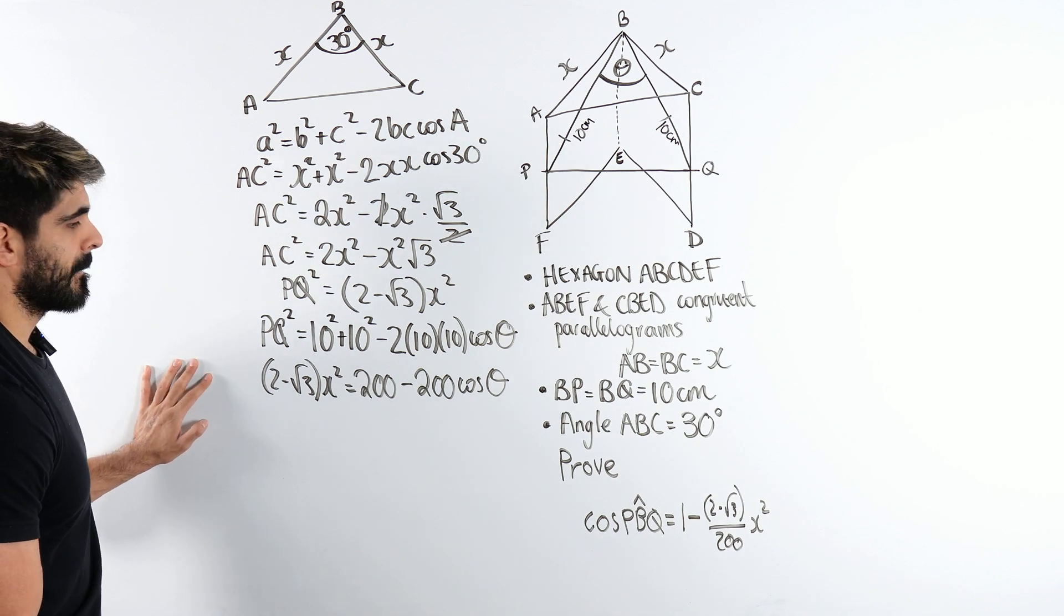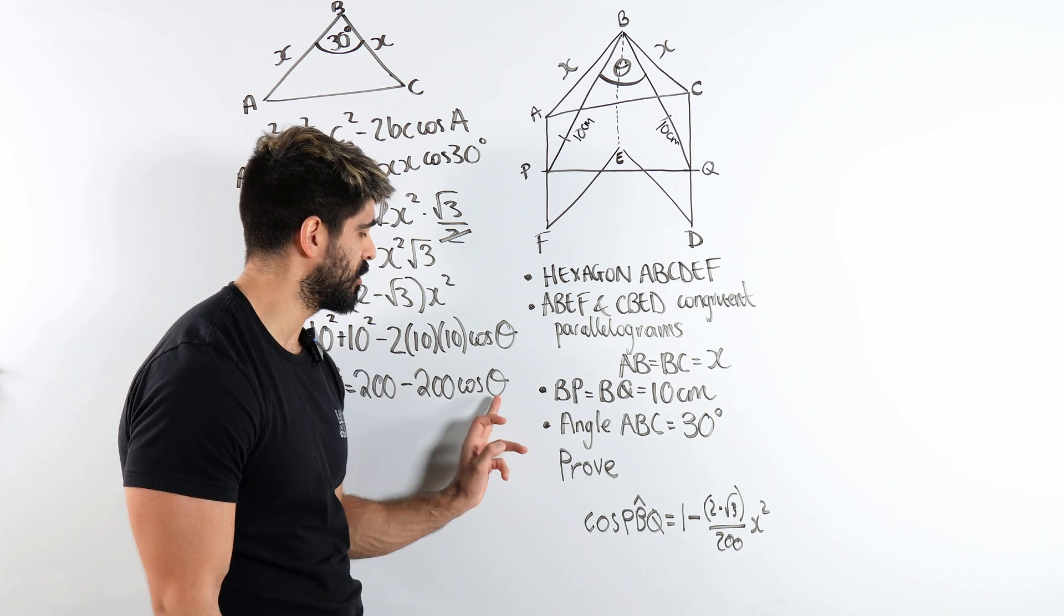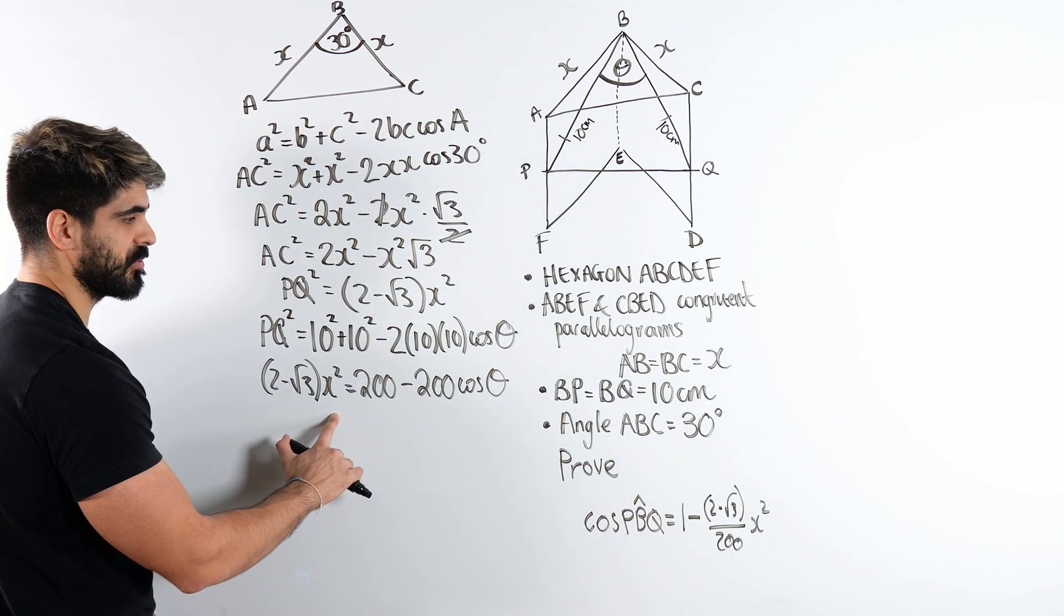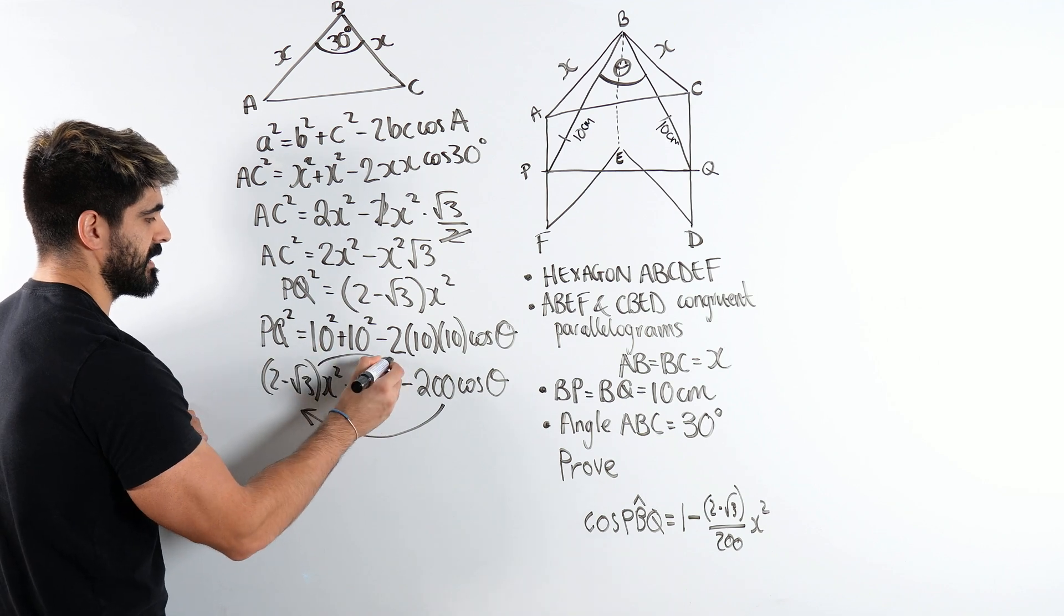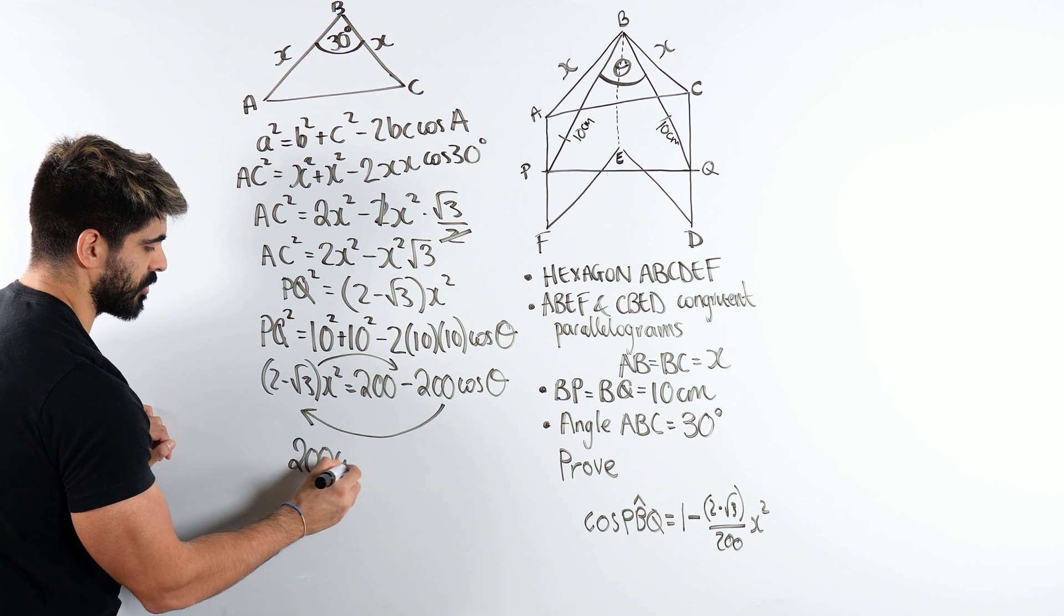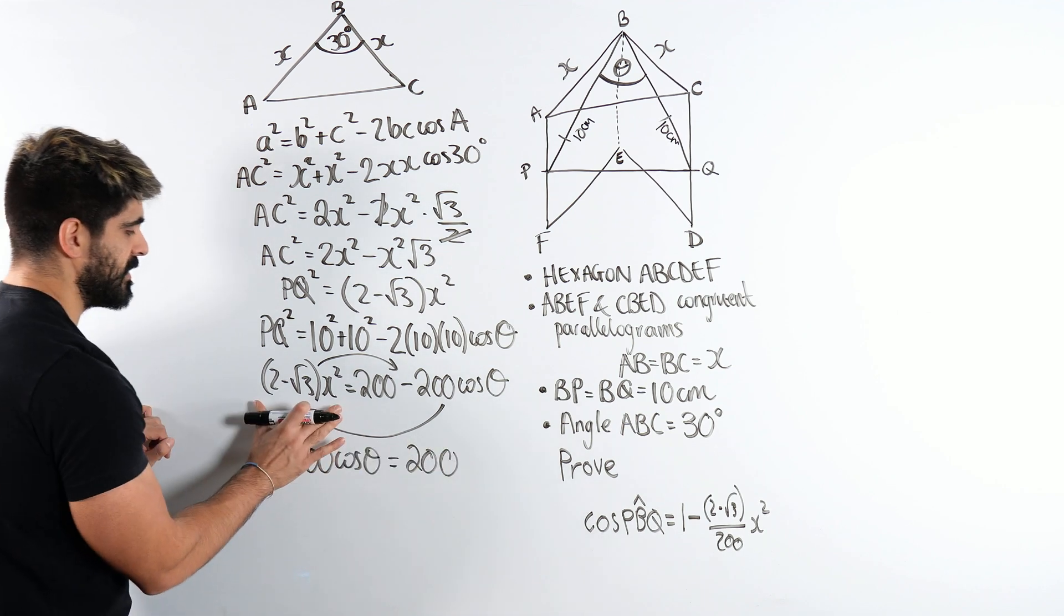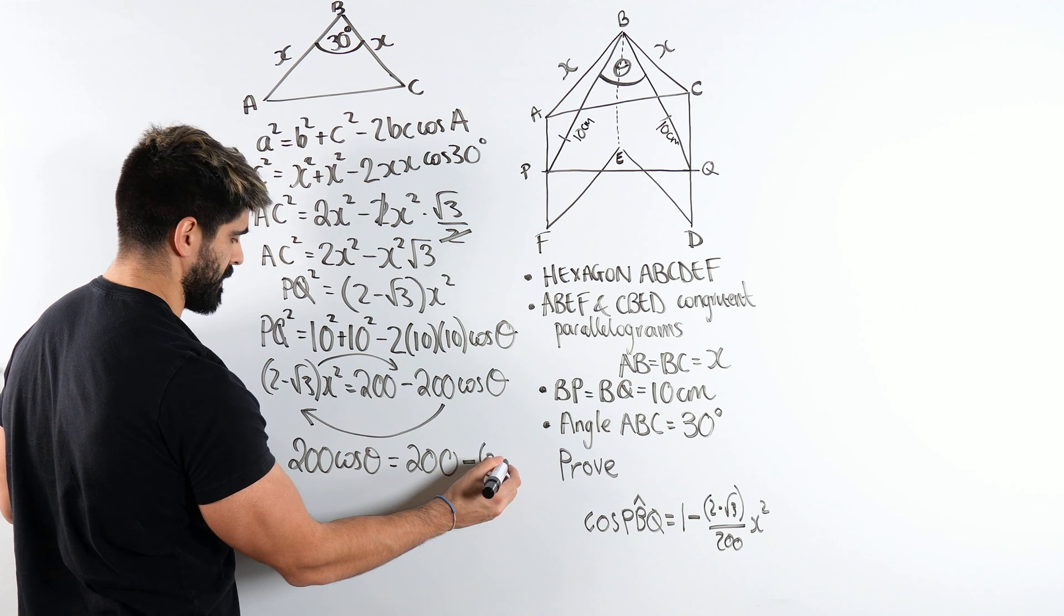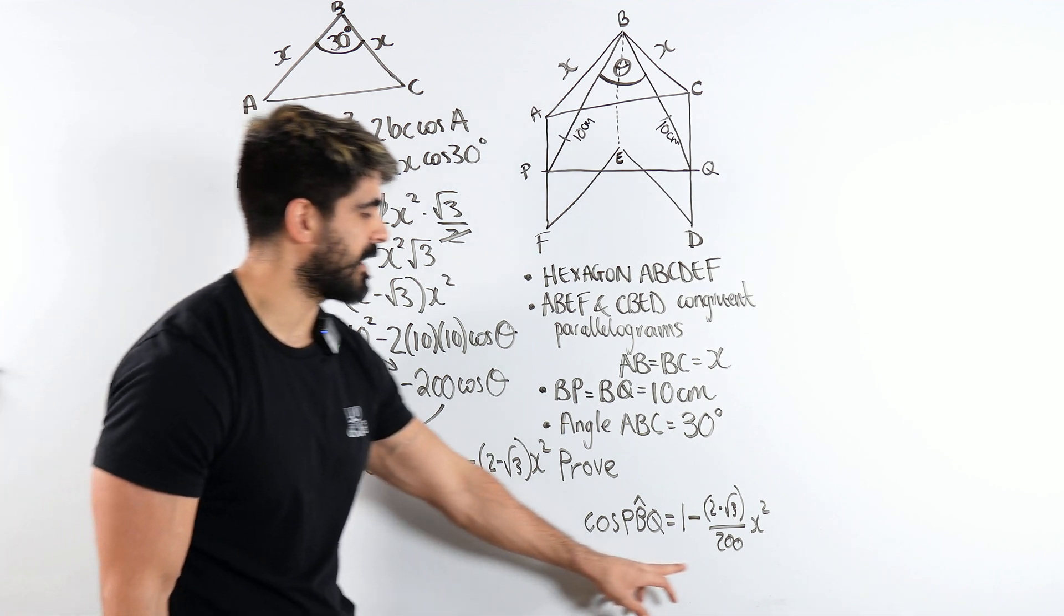Now, I see how they're doing this. We're going to rearrange for cos PBQ. So the first thing I'm going to do - 2 minus root 3, 2 minus root 3 X squared. So I'm going to bring this here to make it positive. I'm going to bring this here to make it negative. So the minus 200 cos theta over on this side will be 200 cos theta is 200, then this positive thing on the other side will be negative. It will be negative of (2 minus root 3) X squared.